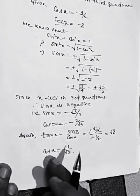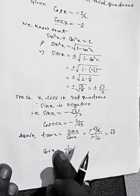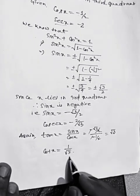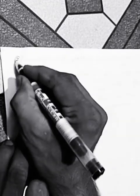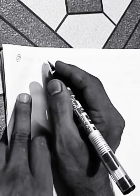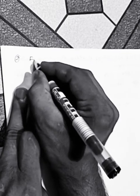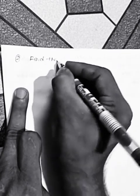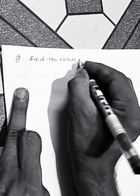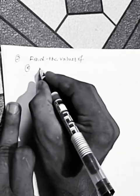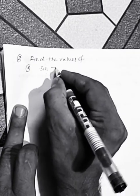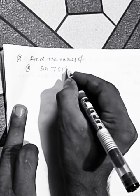Let us take the next question. Find the value of sine of 765 degrees.